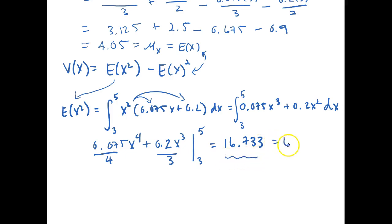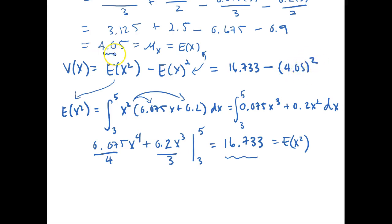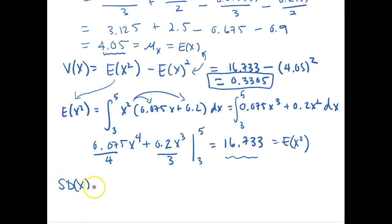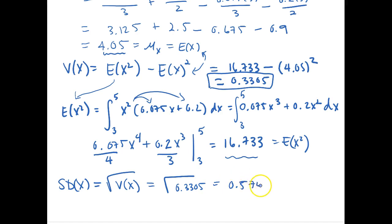So 16.733 is the expectation of x squared. Plugging into our formula, the variance equals 16.733 minus 4.05 squared, giving a variance of 0.3305. The standard deviation of x is simply the square root of the variance: the square root of 0.3305, which equals 0.5749. That's how we calculate variance and standard deviation.